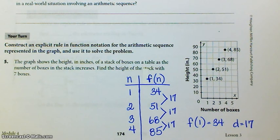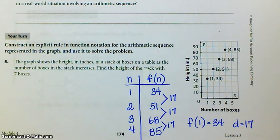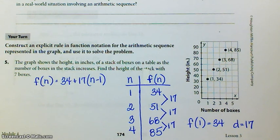So I'm going to use those and put them into the explicit rule. There's my explicit rule: 34 plus 17, n minus 1. And then we're going to find the height of the stack with 7 boxes.